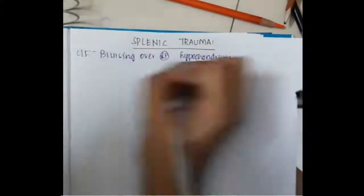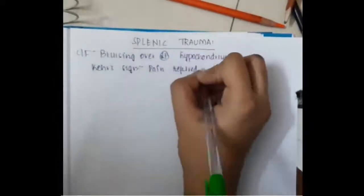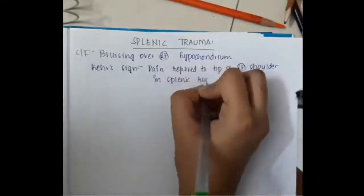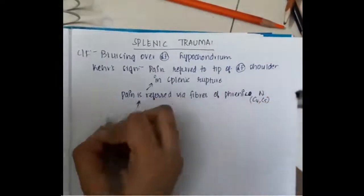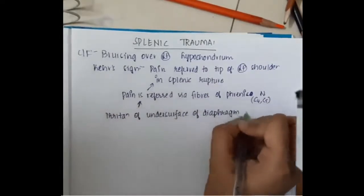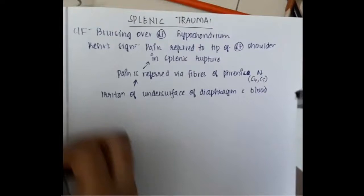The next important organ injury is splenic trauma. Clinical features include bruising over the left hypochondrium and Kehr's sign, where pain is referred to the tip of the left shoulder in splenic rupture. This occurs because the hematoma around the spleen irritates the undersurface of the diaphragm, which is supplied by phrenic nerve fibers, referring pain to the left shoulder tip — this is Kehr's sign.